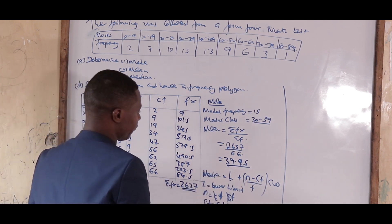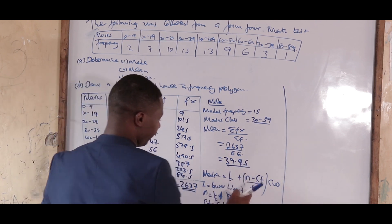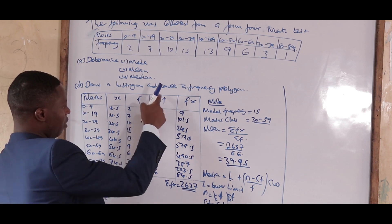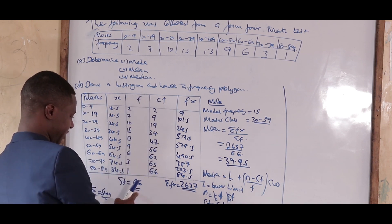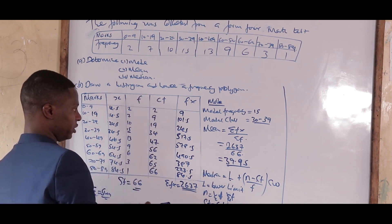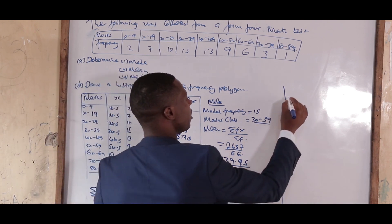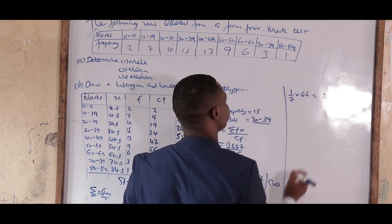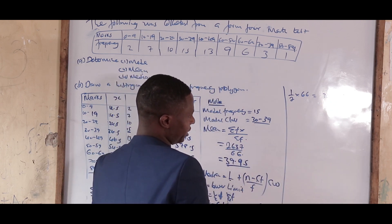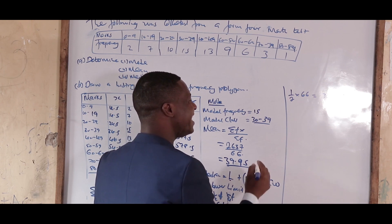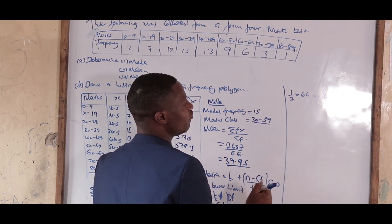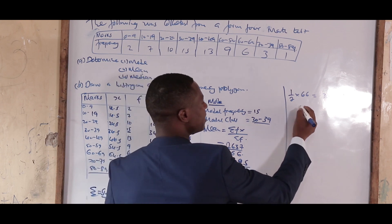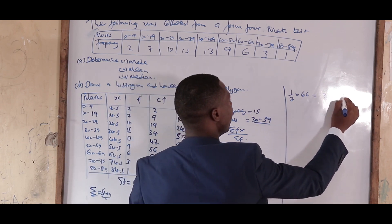Sigma f is 66, so half of 66 is 33. We need to understand that the median of an even number of values is two values. So the median positions for 66 values are position 33 and position 34.